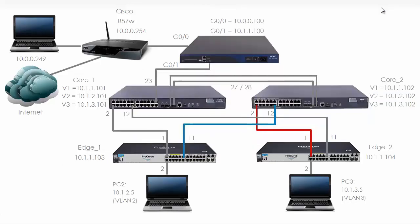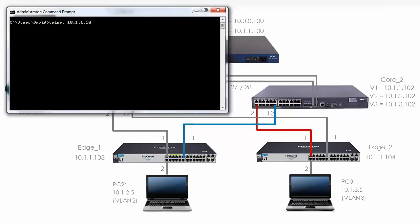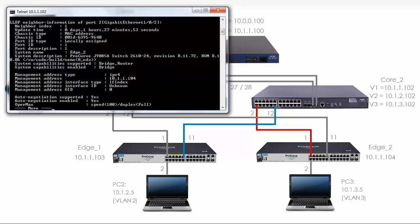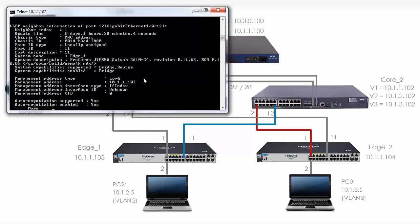The cabling on core 1 looks correct. Now let's look at core 2. I'll telnet to 10.1.1.102 and run 'display LLDP neighbor information'. On Gigabit 1.0.2 we have a connection to edge 2, a ProCurve switch on port 1. The colors red and blue are only used to differentiate cables in the diagram and have no other meaning. The IP address of that switch is 10.1.1.104. Gigabit port 1.0.12 is connected to port 11 on edge 1, a ProCurve switch at IP 10.1.1.103.